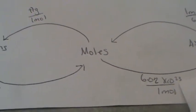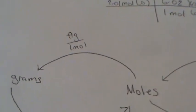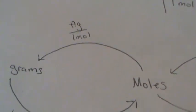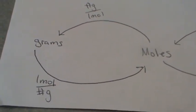To get from moles to grams, we put number of grams divided by one mole. To get from grams to moles, we get one mole divided by the number of grams.